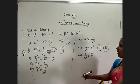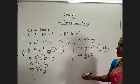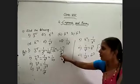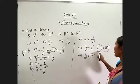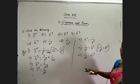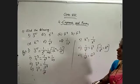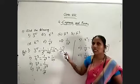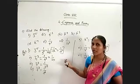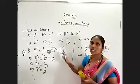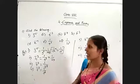Remember, not only left to right but right to left also we must know the formula. What is the first law? a power minus n is equal to 1 by a power n. And that means 1 by a power n is equal to a power minus n.